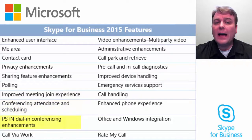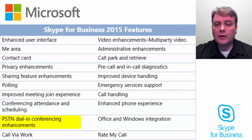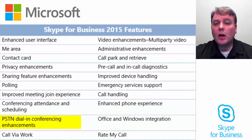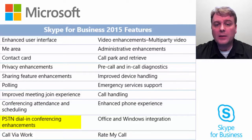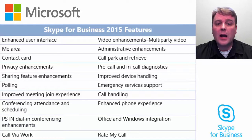There were also PSTN dial-in conferencing enhancements made. When users join a call, a minimum number of short, concise prompts occur. Callers will no longer be disconnected if no one is available to accept the call — instead, they wait in the lobby. Meeting organizers can accept or decline admission to a caller waiting in the lobby. Callers also have access to DTMF commands through a Help menu item. Callers are notified when calls are recorded. There are numerous additional enhancements to read about in the related document for this lesson.